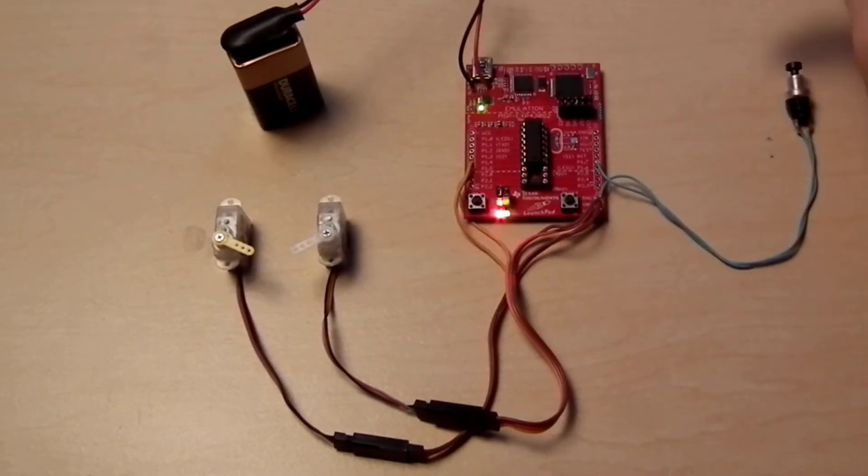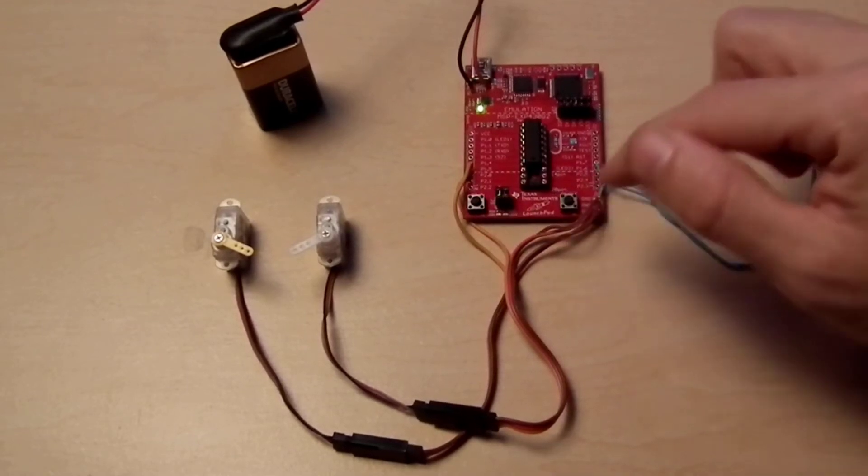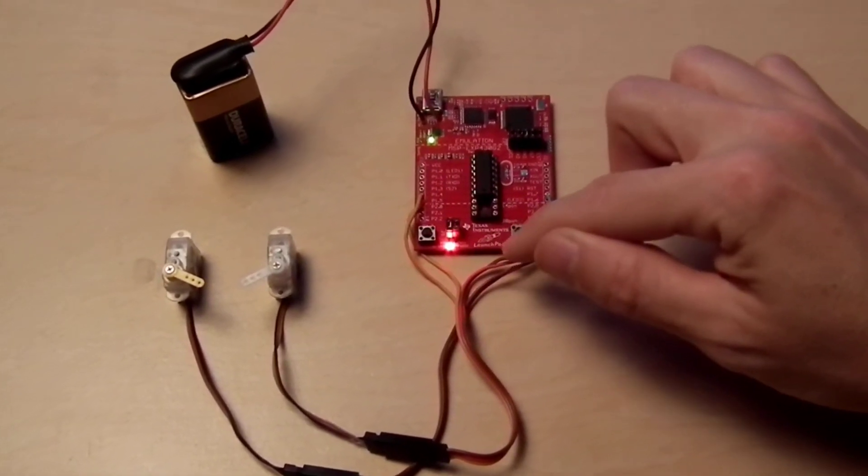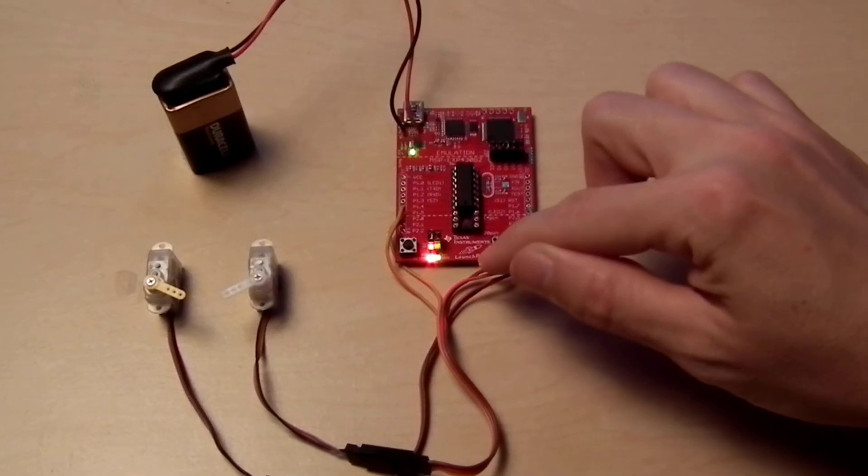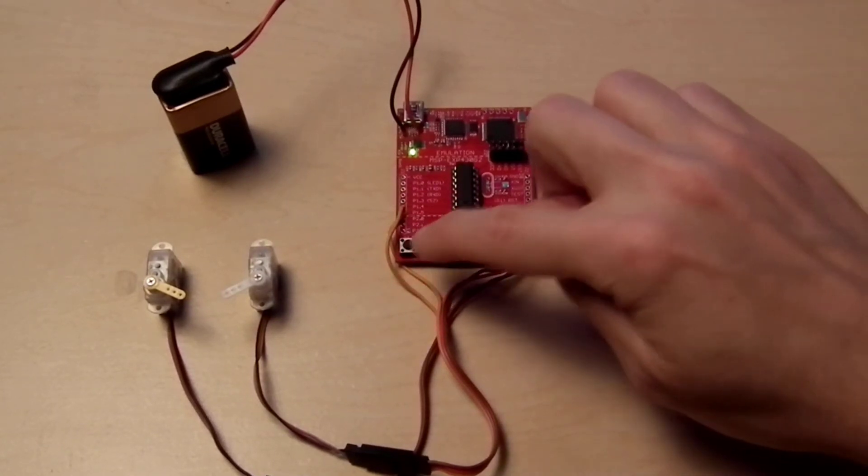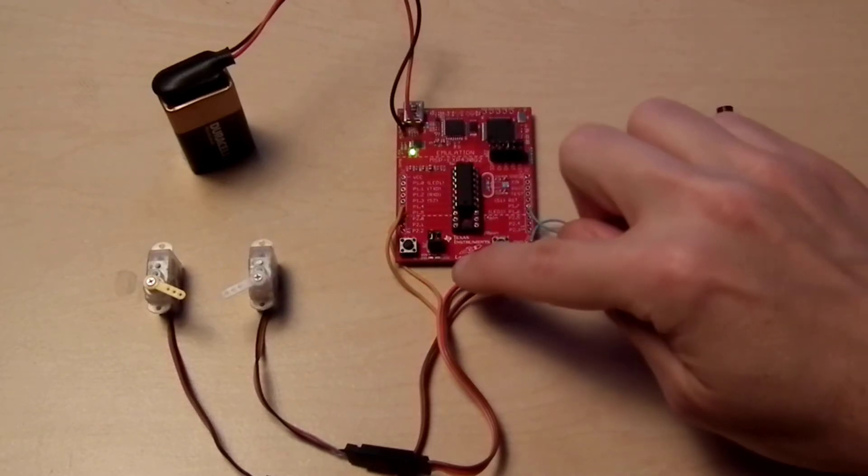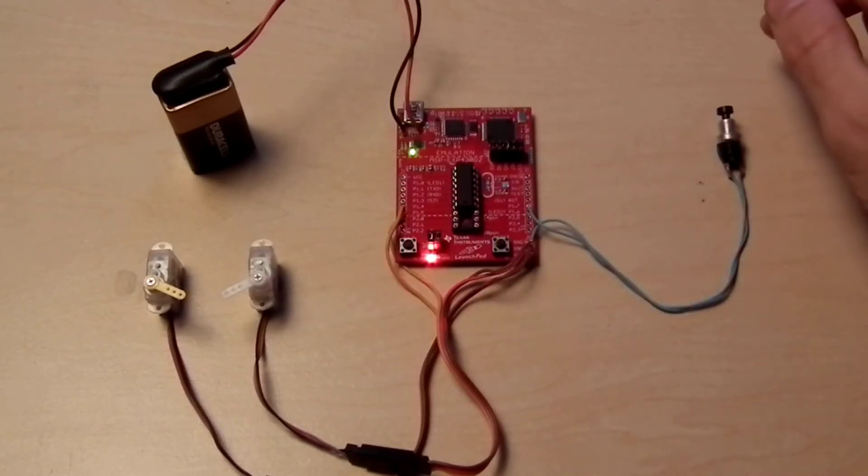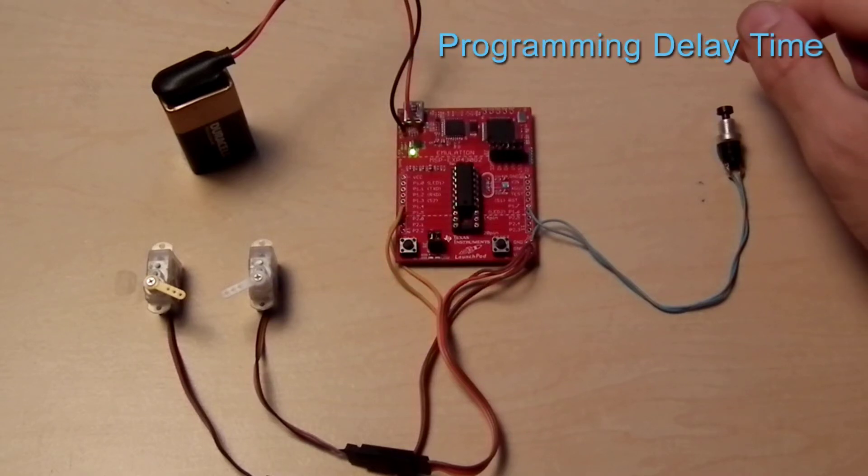The LEDs will now display a one second flash count of their timer delay settings, red blinking for servo A and green blinking for servo B. Holding in the mode button and tapping the reset button will allow you to configure the two delay times for the servos.